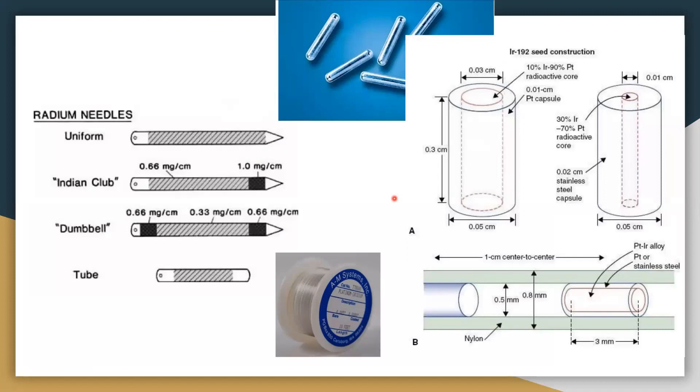Different kinds of sources. These are the traditional sources, radium needles in different forms: uniformly distributed, Indian club at either end, dumbbell at either end, and the activity in large lost points. Whereas iridium source, which is nowadays quite popular, comes in different forms. These seeds, wire, and this is how it's applied from the inside.